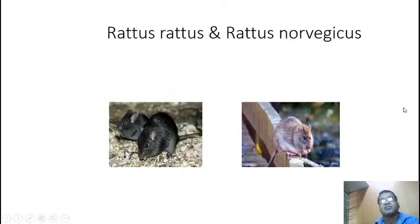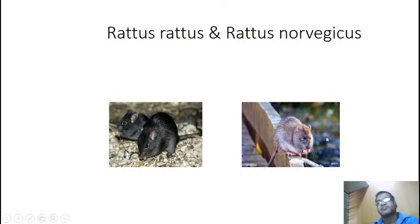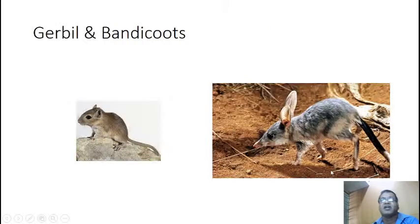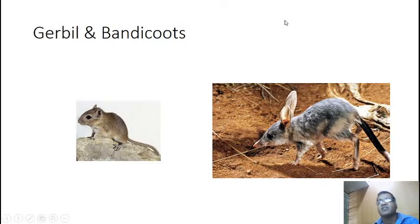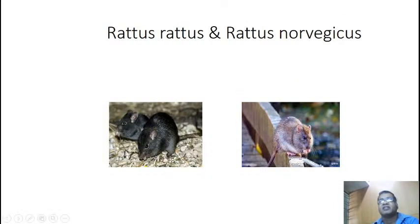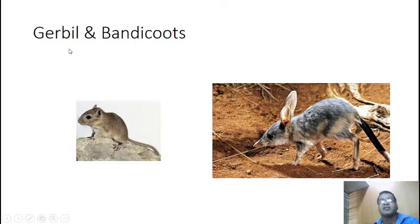Rattus rattus is the domestic rat and Rattus norvegicus is the sewer rat, present in gutters and drainage. These carry Yersinia pestis and transmit to humans by the bite of rat fleas. Gerbils and bandicoots are wild rodents that also carry Yersinia pestis infection — this is the sylvatic plague cycle. Domestic plague is caused by Rattus rattus and Rattus norvegicus, and sylvatic plague is caused by gerbils and bandicoots.